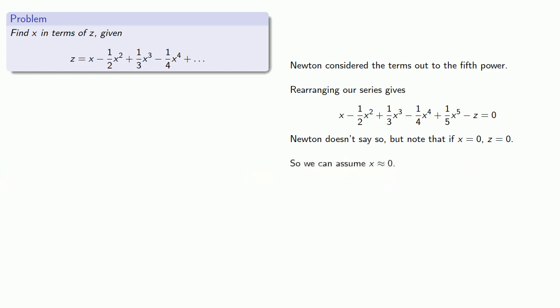So, we can assume that X is close to zero. This means the higher powers of X are even smaller. So, our equation becomes X minus Z is approximately zero, which gives X approximately equal to Z as our starting point.